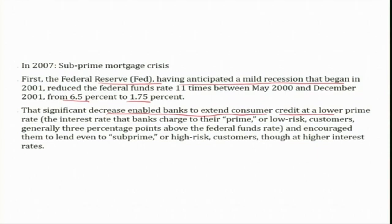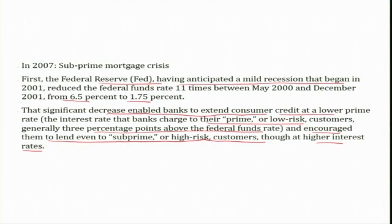Since the rate of interest had declined considerably, banks had already lent to their prime customers at 3 percentage points above the federal funds rate, and they still had more liquidity. This encouraged them to lend even to subprime or high-risk customers — though at a slightly higher interest rate — because the market interest rate was very low. They extended housing loans especially to subprime customers as well.